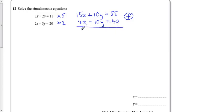Well, that makes 19x, this makes 0, and this makes 95. So, I'm really solving 19x equals 95, or, therefore, x equals 5.